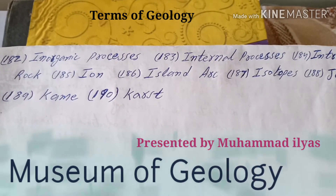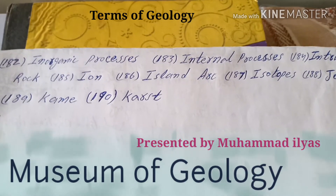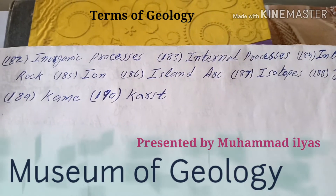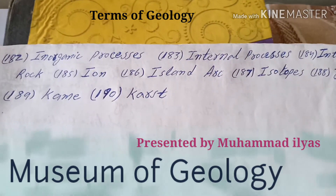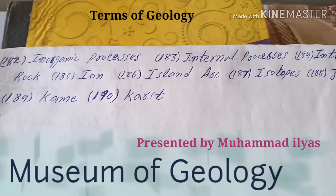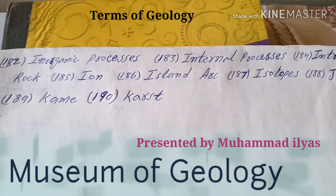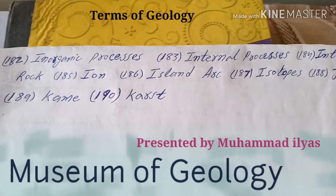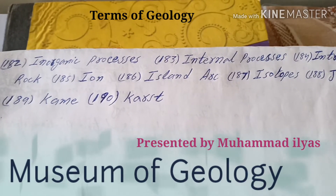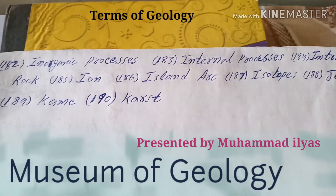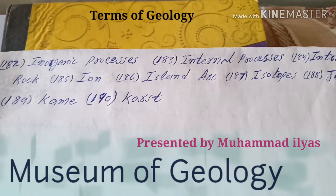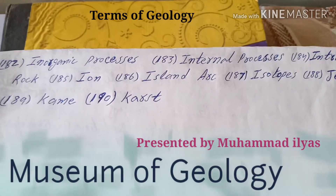On number 185 there are ions. An ion is an atom or molecule that possesses an electrical charge.